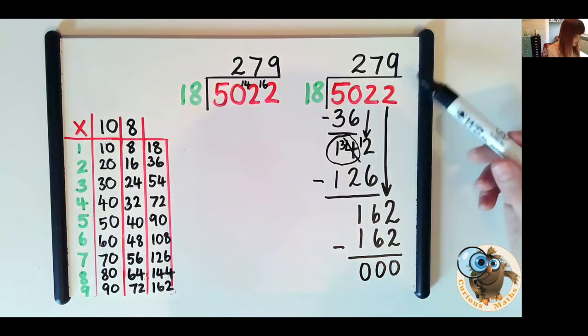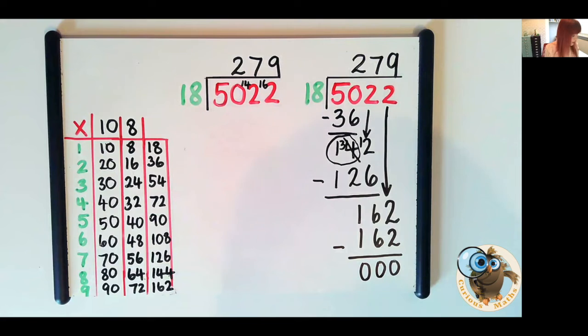So our final answer is 279. Now we're doing all of the questions I'm going to show you today are going to have whole number answers but there will be another video which shows what you do with that bit you've got left if there is a remainder.